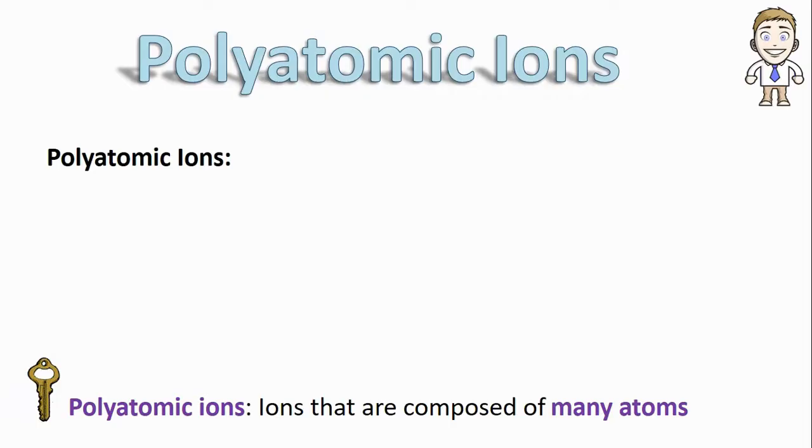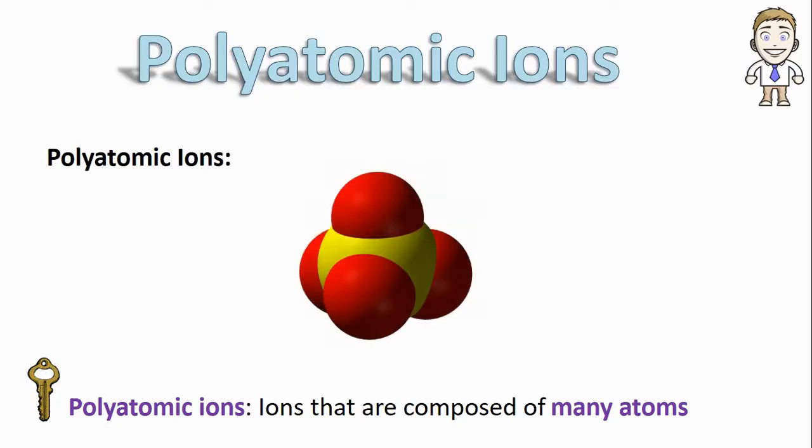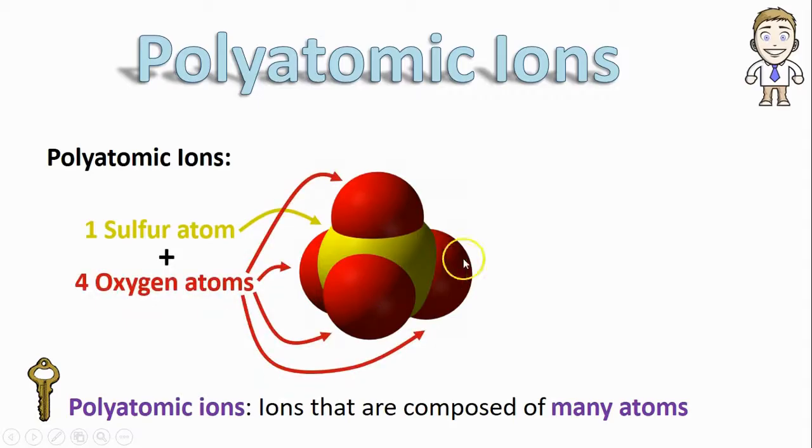So what exactly does a polyatomic ion look like and how can an ion be made of many atoms in the first place? Well, here's a good example of one. You can see there's a yellow sulfur atom in the middle and it's surrounded and bound to four other oxygen atoms. That's the many atoms part.